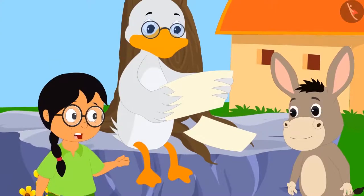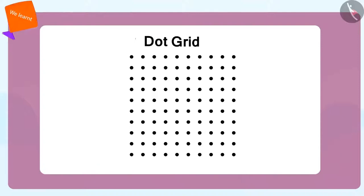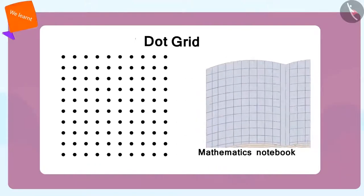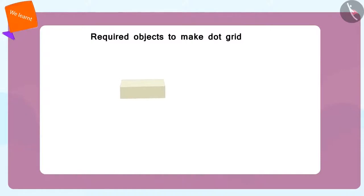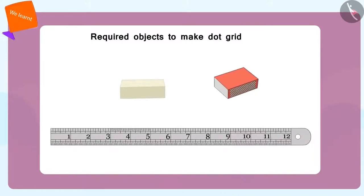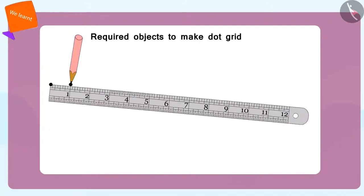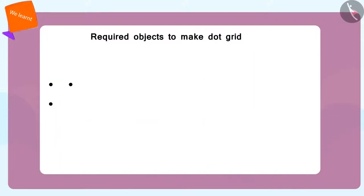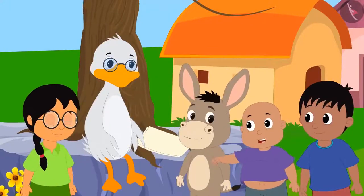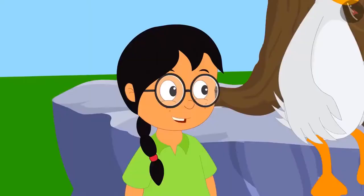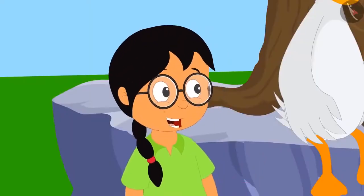Dot grid? What is that? I will explain. Suppose in your maths book, where every line meets, you make a point — it will become a dot grid. If you do not have a dot grid, you can make it by using everyday items. Just place the points next to each other and at equal distances. To make it, you can use a ruler, a rubber, a matchbox, or any other small thing. With some practice, I can make this dot grid almost myself. Can you please show me how to use this dot grid? Meenu asks.